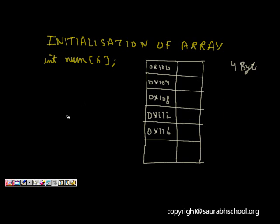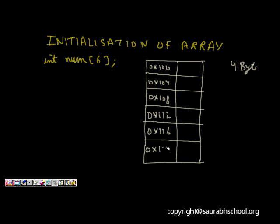So for num[6], we have 6 memory locations differing by 4 bytes each. Memory is allocated for 6 integer elements and they currently have some garbage values in all those memory locations.